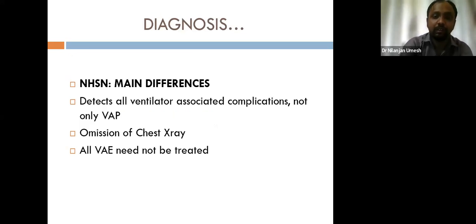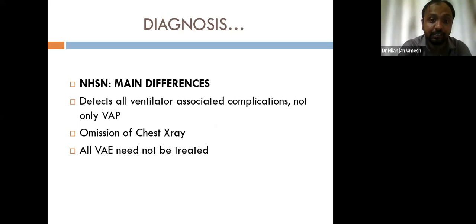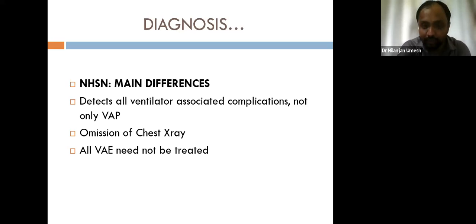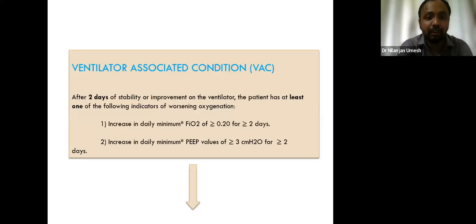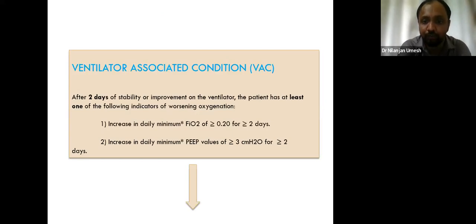A Ventilator-Associated Condition is defined as: after two days of stability or improvement on the ventilator, the patient shows at least one indicator of worsening oxygenation — specifically an increase in daily minimum FiO2 of ≥0.2 for ≥2 days, or an increase in daily minimum PEEP of ≥3 cmH2O for ≥2 days. If in addition the patient has a temperature greater than 38°C or less than 36°C, or WBC greater than 12,000 or less than 4,000, and a new antimicrobial agent is started and continued for more than four days, it is classified as IVAC — Infection-Related Ventilator-Associated Complication.